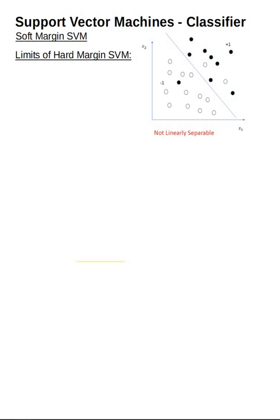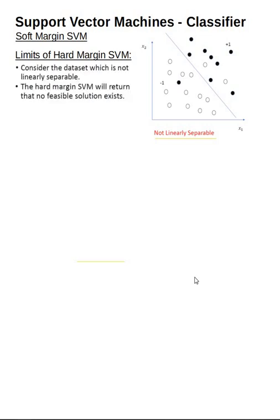We know from our past two videos that if the data is linearly separable, the hard margin SVM does the hyperplane separation. But when the data is not linearly separable, then what happens?